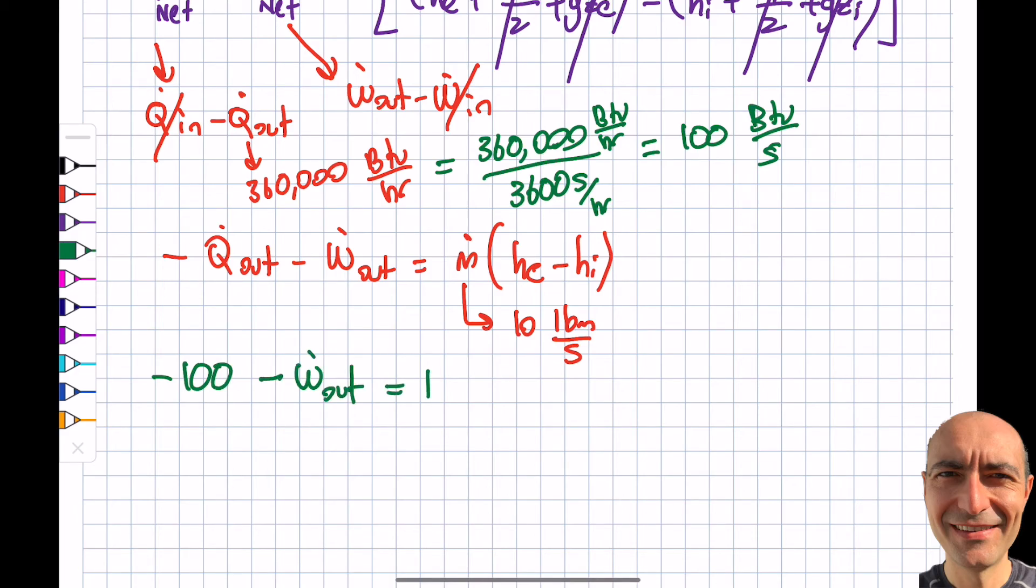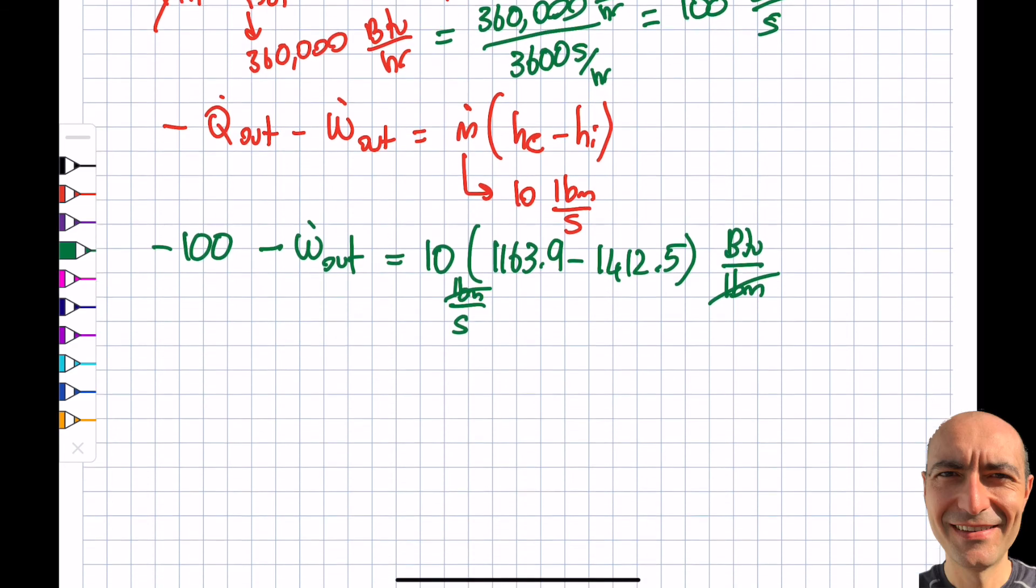So -100 - Ẇout equals ṁ, which is 10, times (hexit 1163.9 - 1412.5), and this is Btu/lbm. This was lbm/s, so pound masses cancel, I get Btu/s, so I'm consistent with respect to what I'm doing. If you use a calculator for this, you're going to get Ẇout = 2386 Btu/s. Every second I'm generating 2,386 Btus.